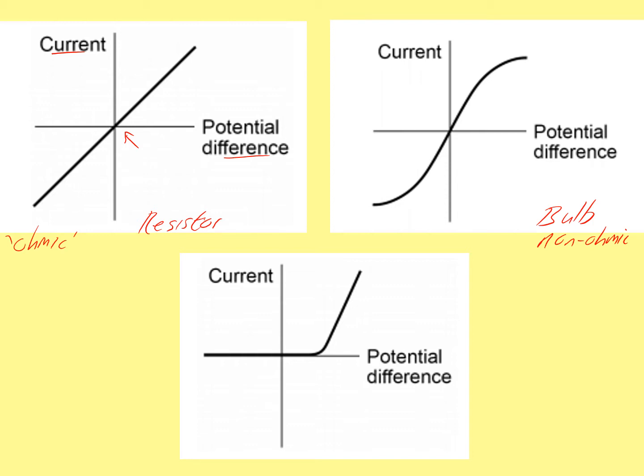The one on the bottom right is the IV curve for a diode. Again, it does not have a straight line, so therefore this is non-ohmic — it does not obey Ohm's law.